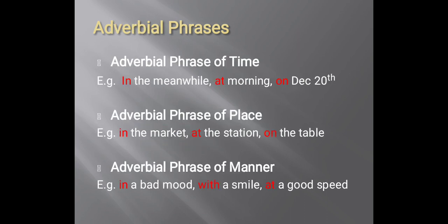Then we have adverbial phrases. We have three types: adverbial phrases of time, adverbial phrases of place, and adverbial phrases of manner. Examples of place include: 'in the market,' 'at the station,' 'on the table.' Examples of manner include: 'in a bad mood,' 'with a smile,' 'at a good speed.' These explain manner but always start with a preposition, so we call them adverbial phrases.